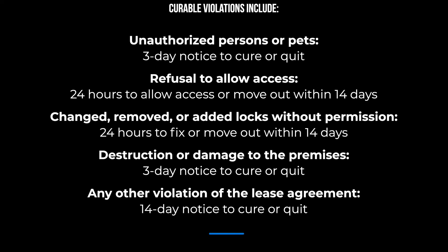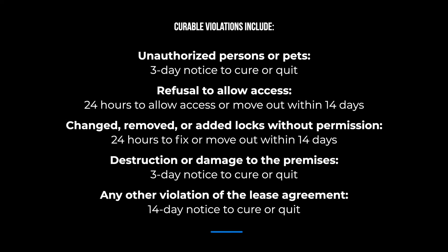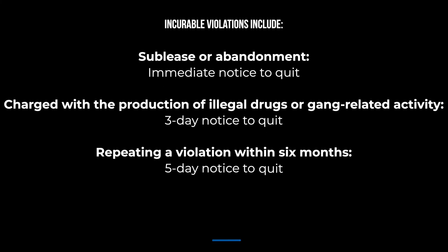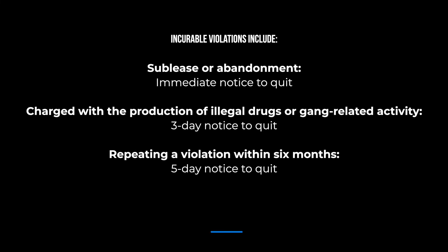Curable violations include: unauthorized persons or pets — 3-day notice to cure or quit; refusal to allow access — 24 hours to allow access or move out within 14 days; changed, removed, or added locks without permission — 24 hours to fix or move out within 14 days; destruction or damage to the premises — 3-day notice to cure or quit; any other lease violation — 14-day notice to cure or quit. Incurable violations are reserved for more serious breaches: sublease or abandonment — immediate notice to quit; charged with production of illegal drugs or gang-related activity — 3-day notice to quit; repeating a violation within 6 months — 5-day notice to quit.